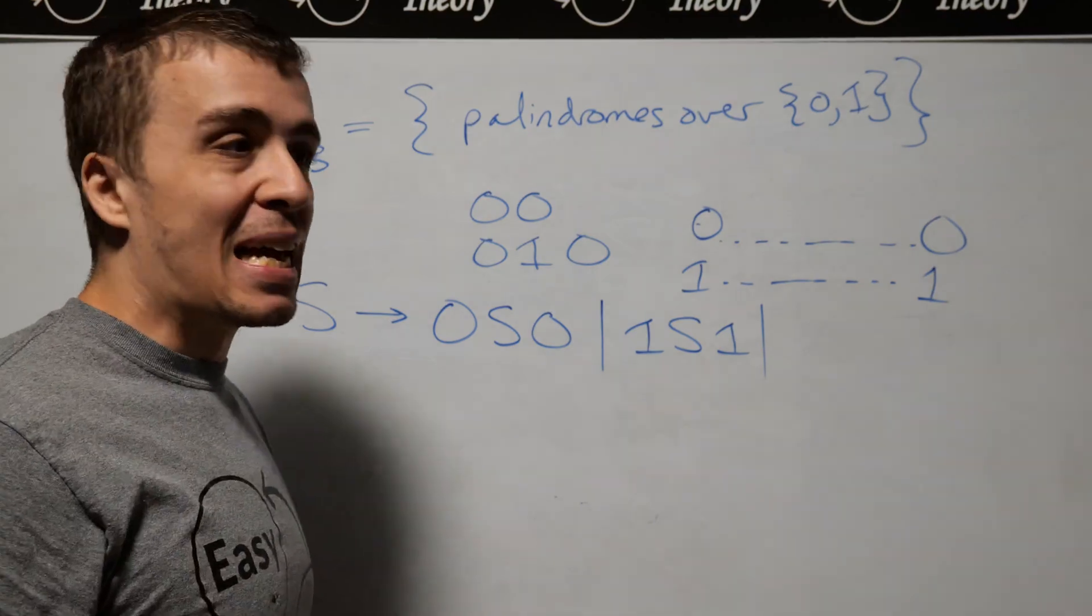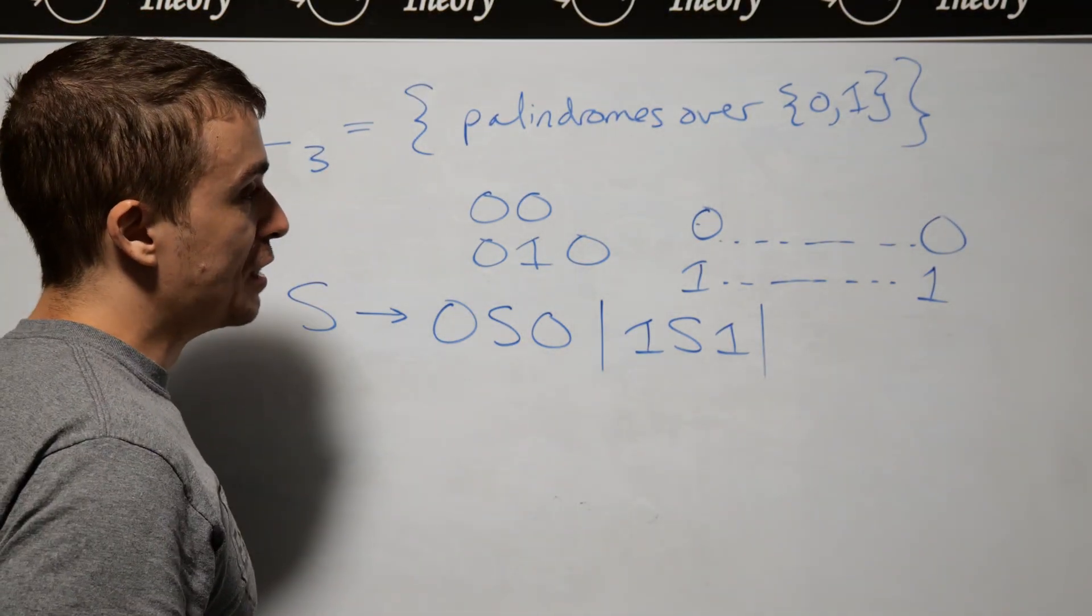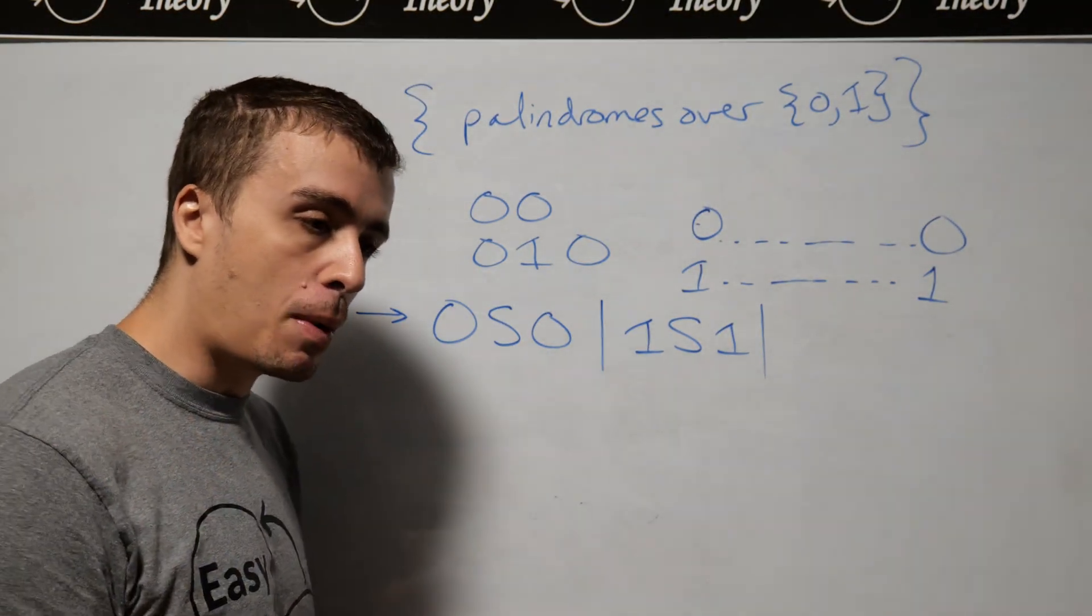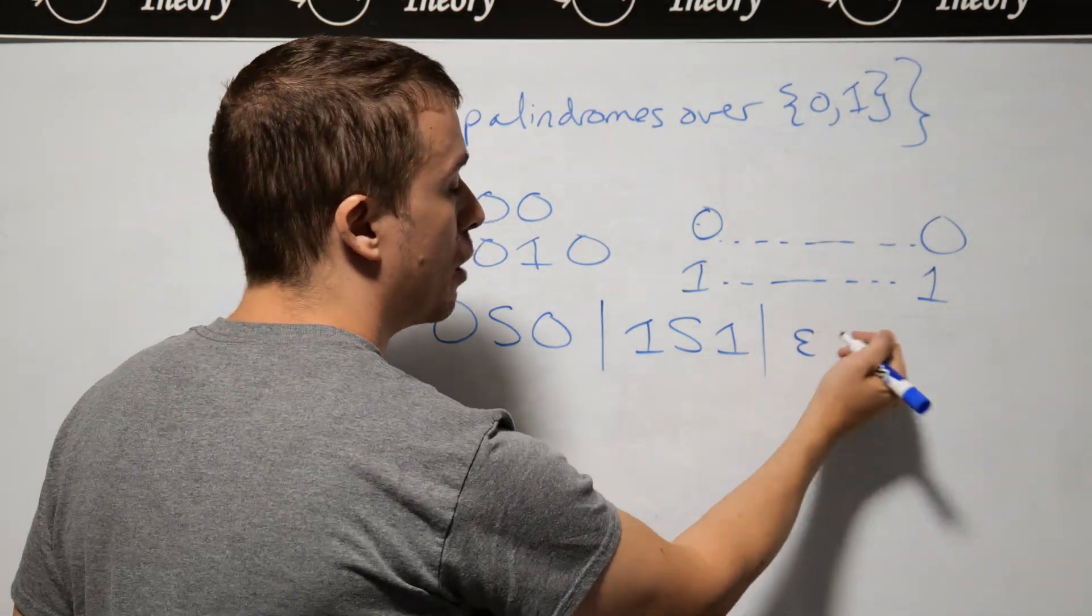Then what are the base cases? These are the inductive cases. What are the smallest palindromes we can have? We can have the empty string.